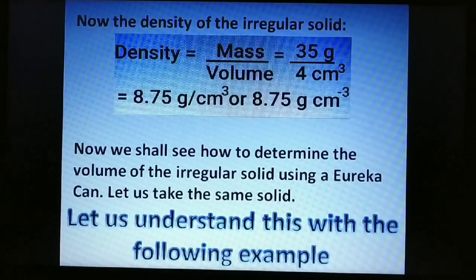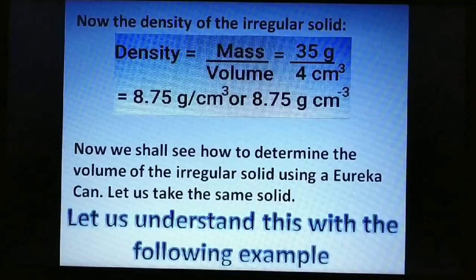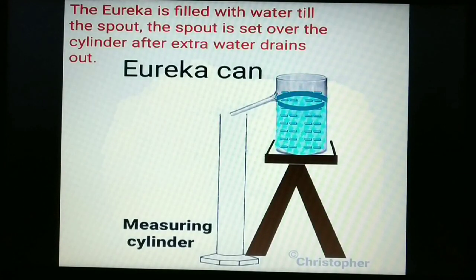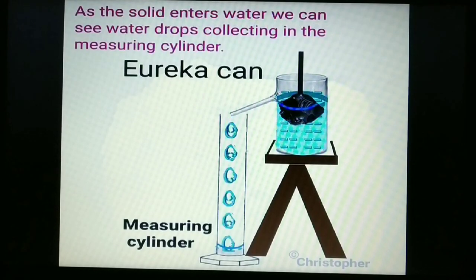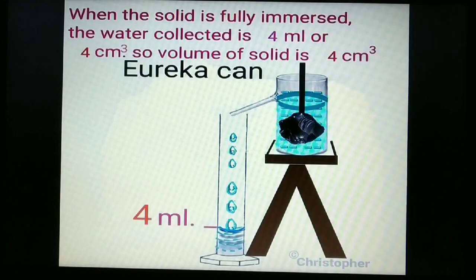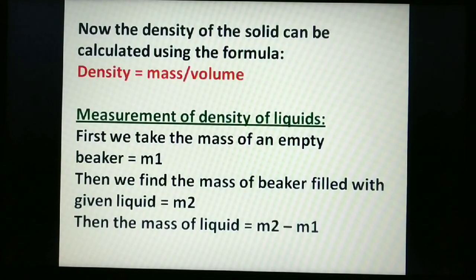Now we see how to determine volume using a eureka can. The eureka can is filled with water till the spout, and placed over a measuring cylinder. After extra water drains, there should be no water in the cylinder initially. The solid is slowly immersed; water displaced collects in the measuring cylinder, giving 4 mL or 4 centimetre cube — the same volume as obtained with the measuring cylinder. Density is then calculated as mass divided by volume.